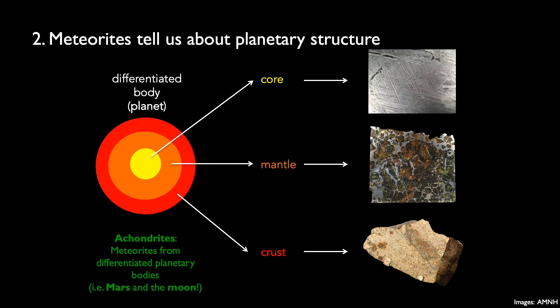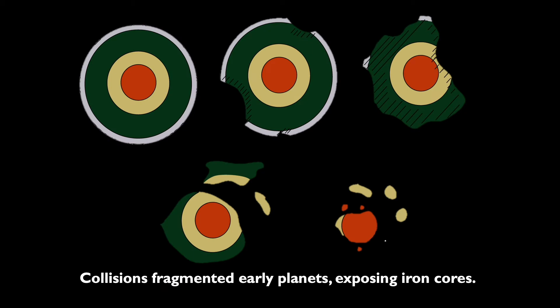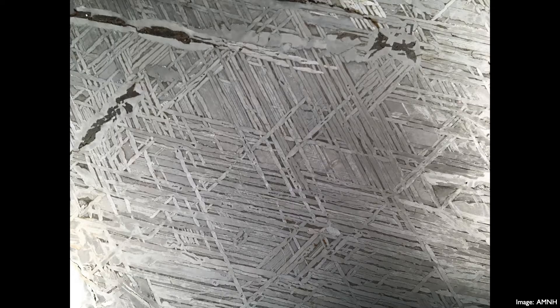You might wonder how we get samples of the different interior layers of a differentiated body. The early solar system was so chaotic that planetesimals were broken apart by impacts, actually exposing the iron core of these planetesimals — and that's how we get iron meteorites in our collections today. This is an example of an iron meteorite, likely from the core of a differentiated planetesimal. What you're seeing is a Widmanstätten pattern — a unique pattern of interwoven nickel and iron crystals formed due to the slow cooling rates of this iron material.